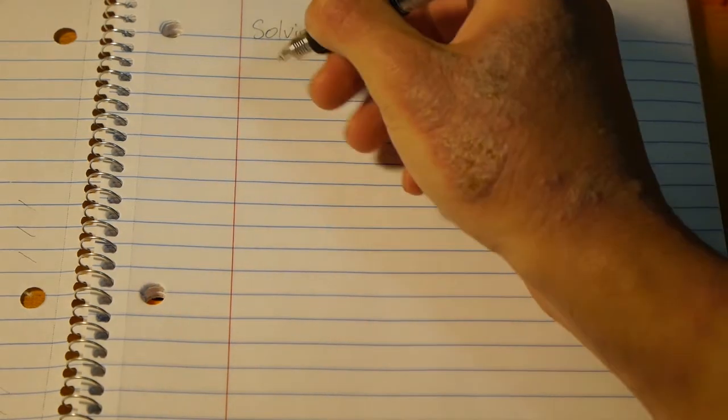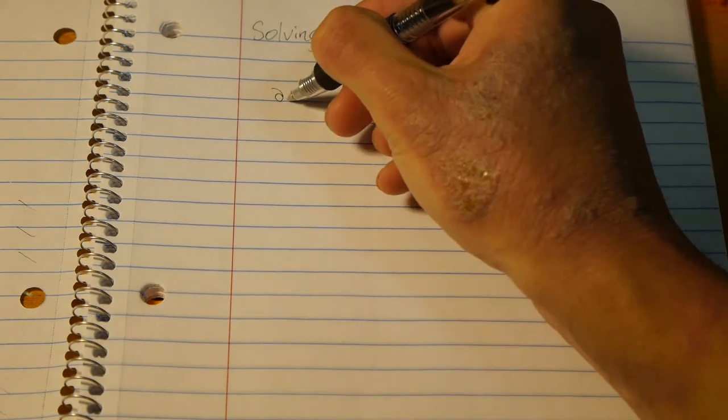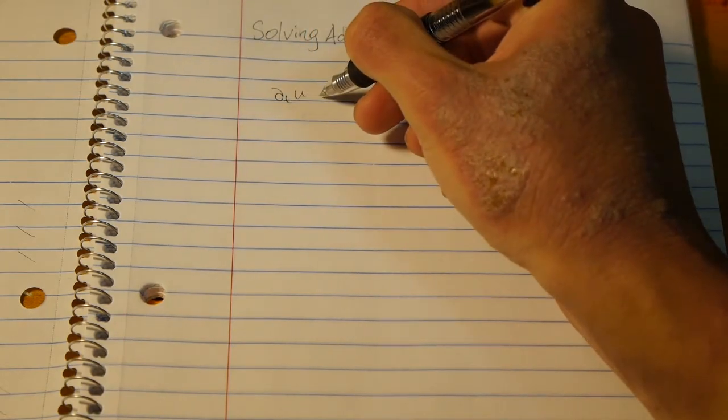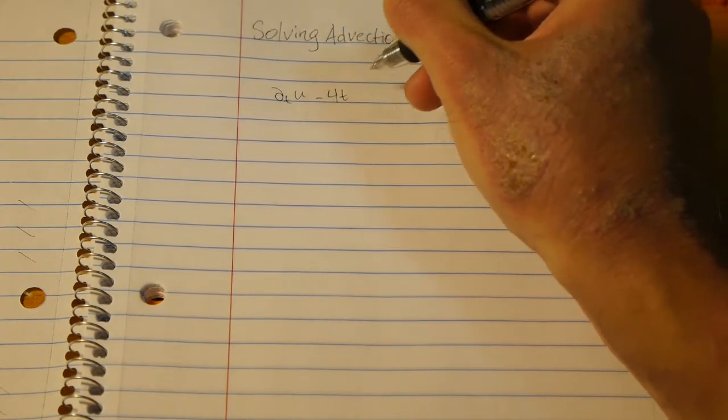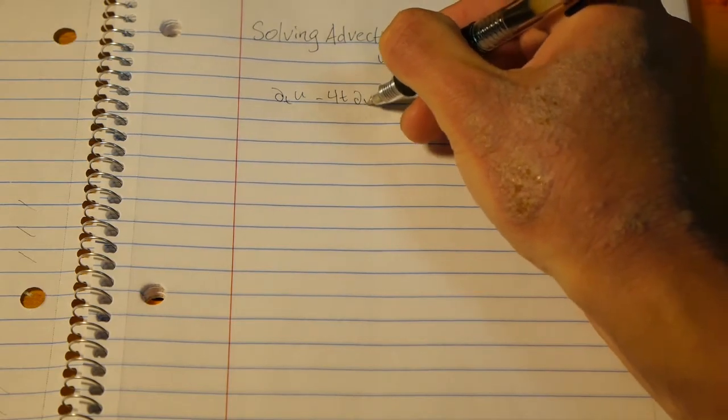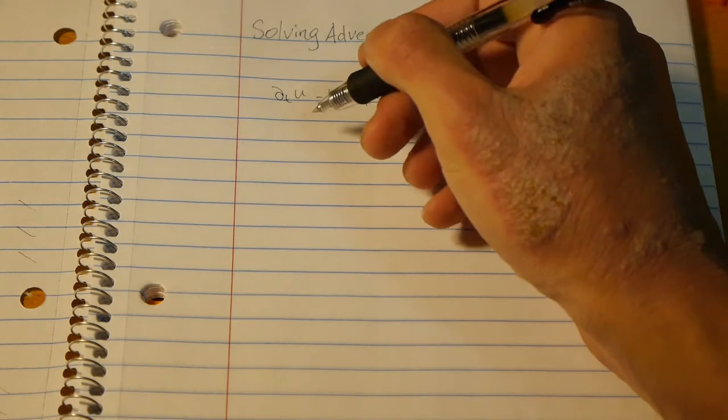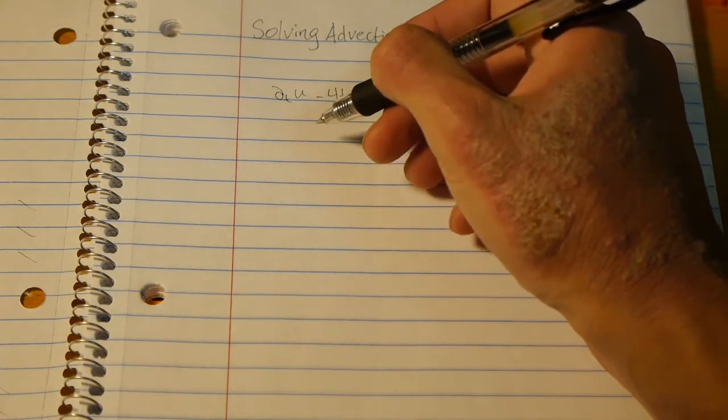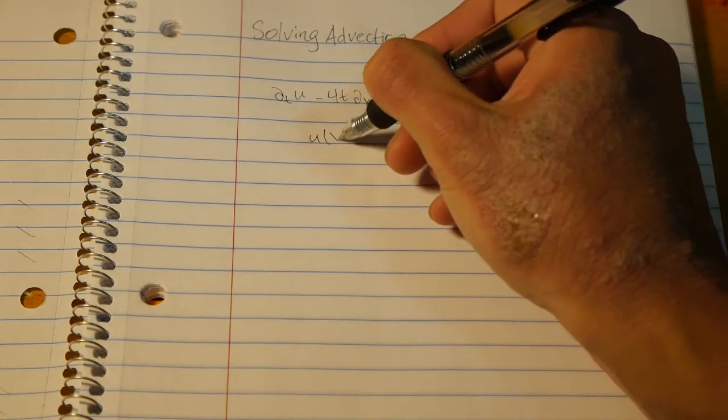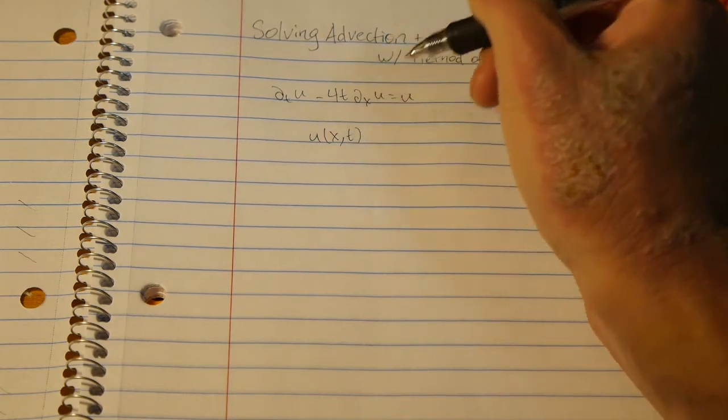We'll start with this example: ∂u/∂t minus 4t ∂u/∂x equals u. And we want to find a solution to this PDE, u(x,t).